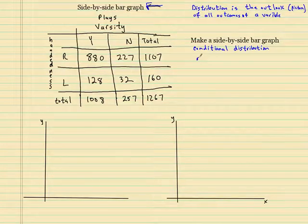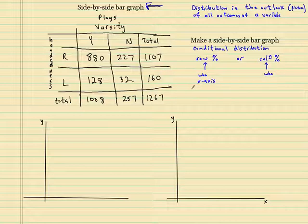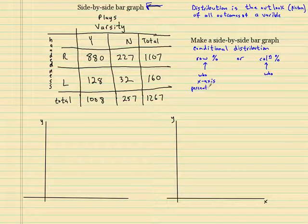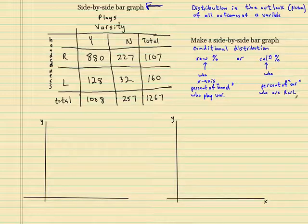So we need the conditional distribution. We have two options: you have the row percents or the column percents. Usually the question dictates which one you do, but if I ask you a side-by-side bar graph and you do it backwards, you're going to get total credit for it as long as what you did was correct. And it all depends on the who.